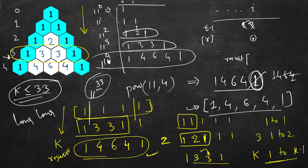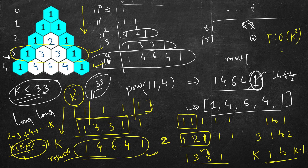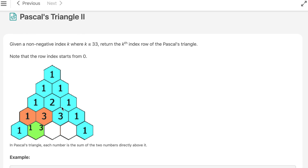We're not using any extra space — this is the result we return, so no additional space is needed. Time taken is 2 + 3 + 4 + ... up to k steps, which is k times (k+1)/2, roughly O(k squared). Space complexity is O(k) for the result we must return.